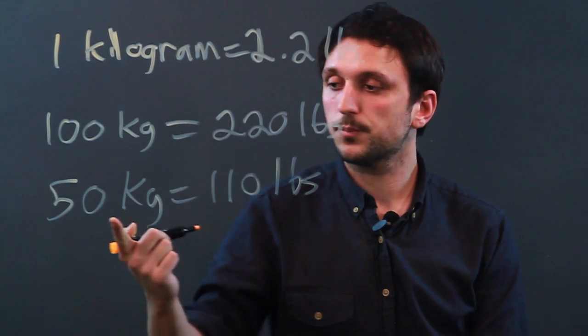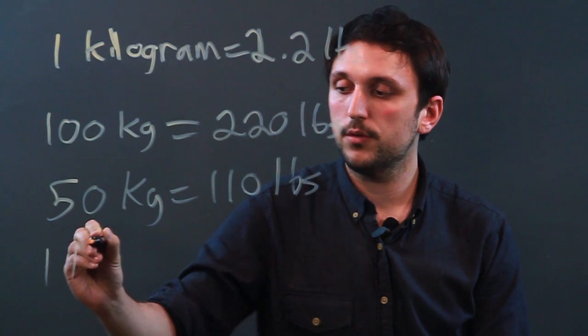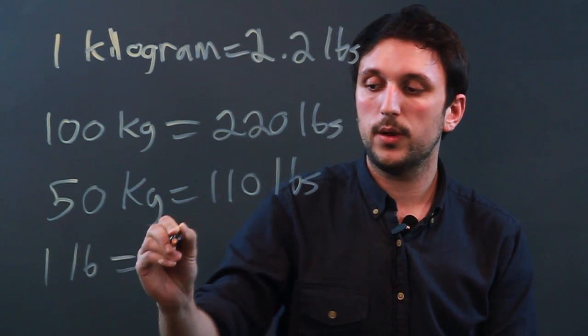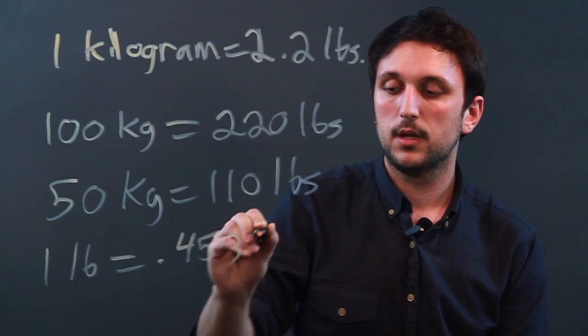So let's look at it backwards. One pound equals 0.453 kilograms.